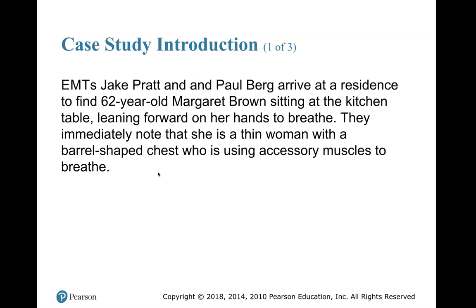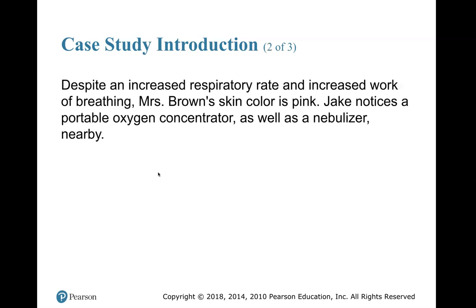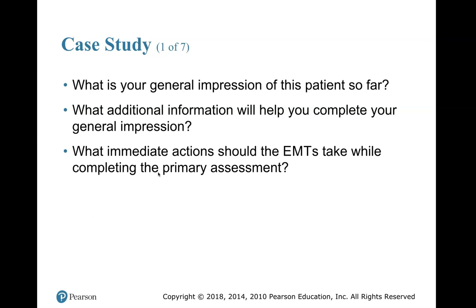Case study. EMTs Jake Pratt and Paul Berg arrive at a residence and find a 62-year-old Margaret Brown sitting at the kitchen table, leaning forward on her hands to breathe. They immediately note that she is a thin woman with a barrel-shaped chest who is using accessory muscles to breathe. Despite an increased respiratory rate and increased work of breathing, Ms. Brown's skin color is pink. Jake notices a portable oxygen concentrator as well as a nebulizer nearby. What is your general impression of this patient? What additional information will help you complete your general impression? And what immediate action should the EMTs take while completing the primary assessment? I encourage you to pause this video and write these questions down.